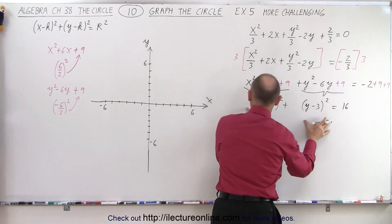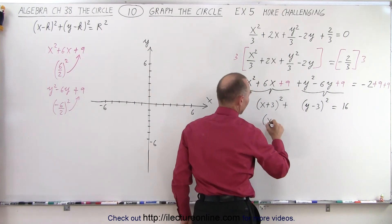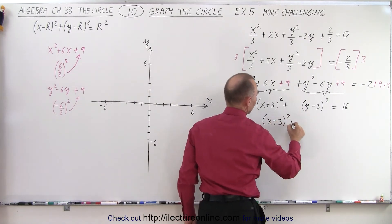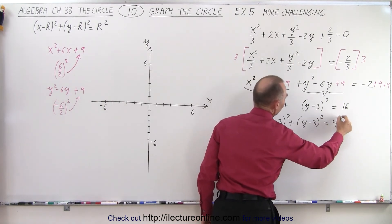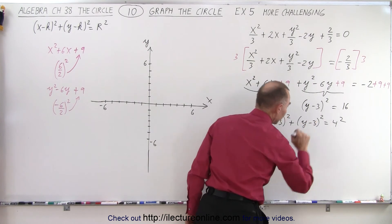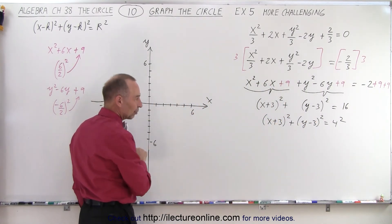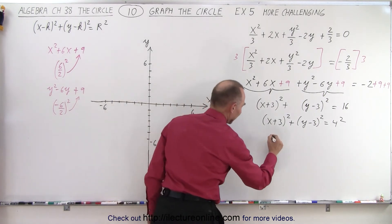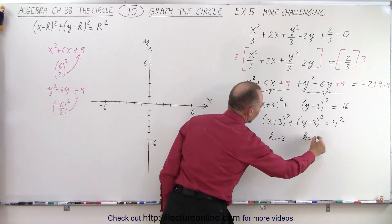And then, of course, to take this and make it look exactly like the general equation, we'll write this as x plus 3 squared plus y minus 3 squared is equal to 4 squared. And now we can see clearly that the radius of the circle will be equal to 4. But first, we need to find the center of the circle. So here we see that h is equal to negative 3, and k is equal to 3.